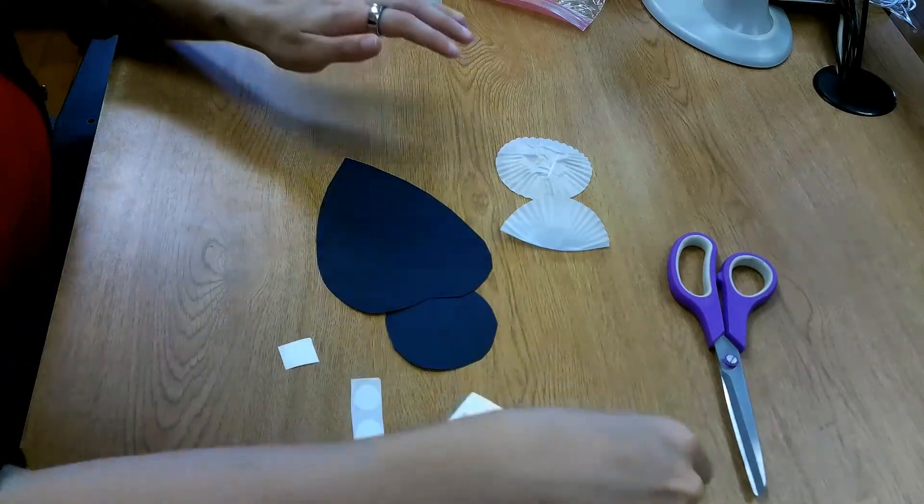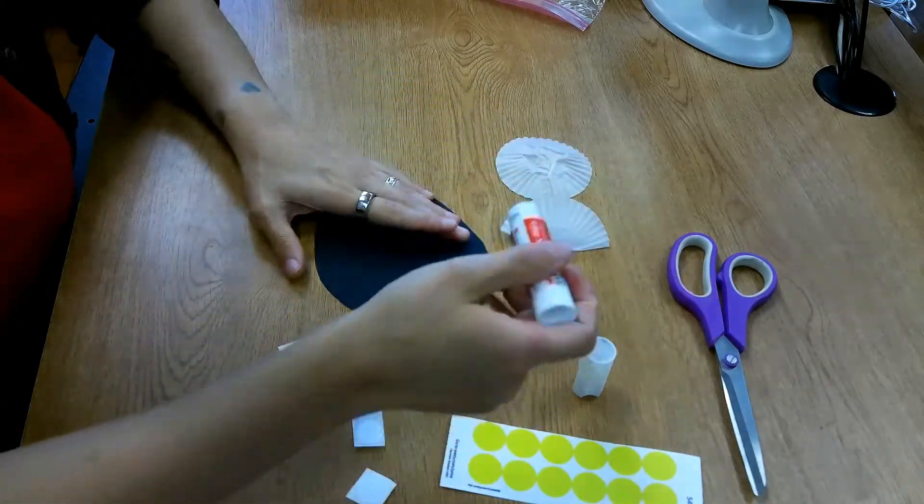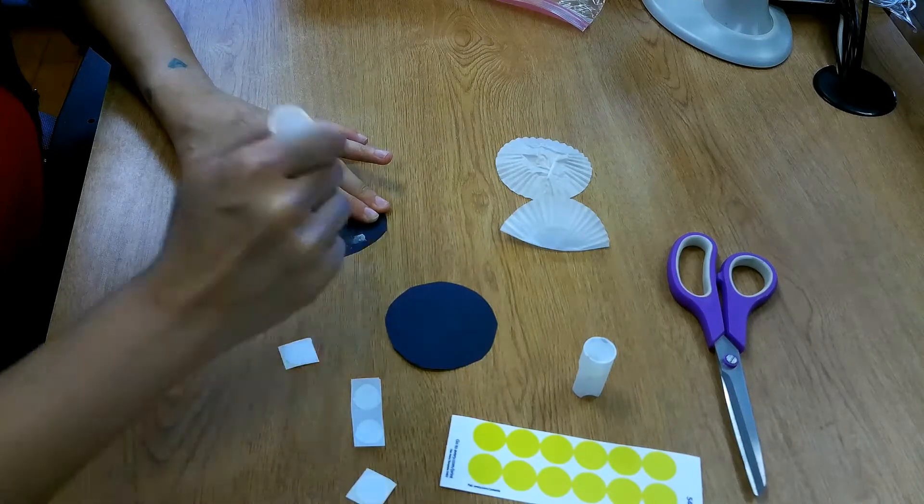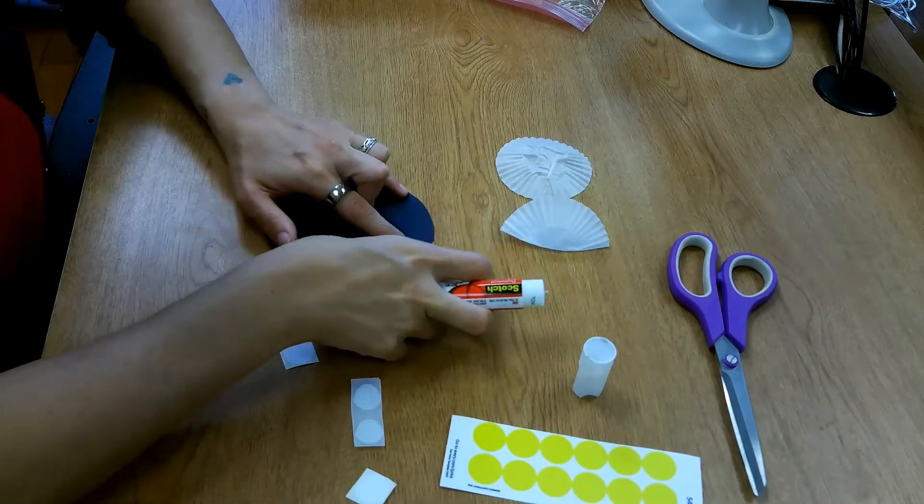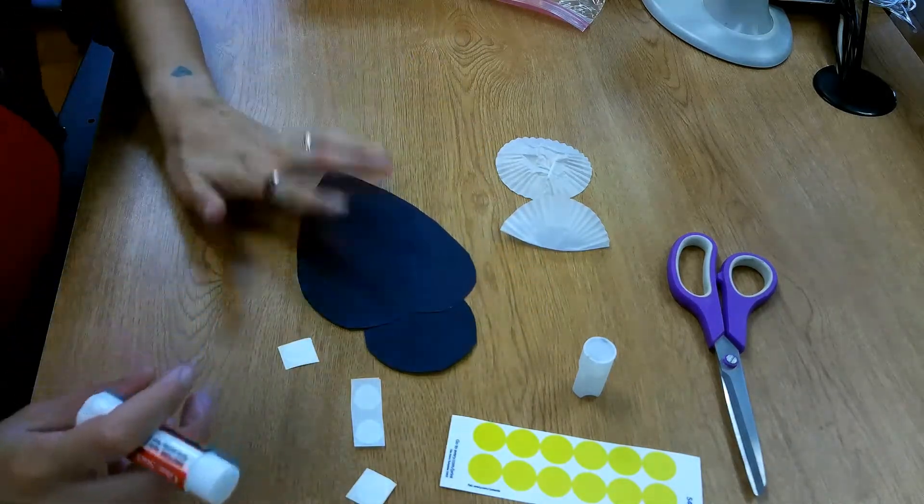And what we'll do is begin by assembling our bumblebee. We'll take some glue and put a little bit of glue on the back of our bee's body and attach the head and then flip it over.